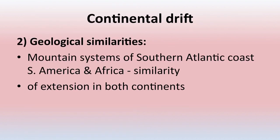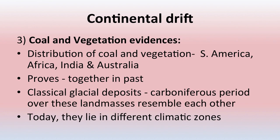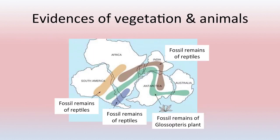The second evidence is geological similarities — the mountain systems of South America and Africa along the southern Atlantic Ocean can be found similar, with extensions in both continents. The third evidence is coal and vegetation — distribution of coal and vegetation of South America, Africa, India, and Australia can be found similar, proving they were together in the past. Classical glacial deposits from the Carboniferous period over these landmasses resemble each other, even though today they lie in different climatic zones.